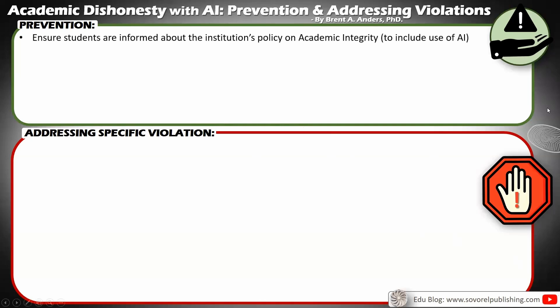First, we want to ensure that students are fully informed about the policies — what are the institutional policies on academic integrity, specifically dealing with AI? This makes it that much more important for institutions to actually have a policy. Whether it's a university, a high school, or elementary school, there needs to be very specific guidance. If there's a student handbook, it needs to be in there as well — not just some broad discussion about academic integrity, but to specifically say the use of advanced AI, such as ChatGPT, is not allowed unless the instructor specifically allows it and gives guidance on that.